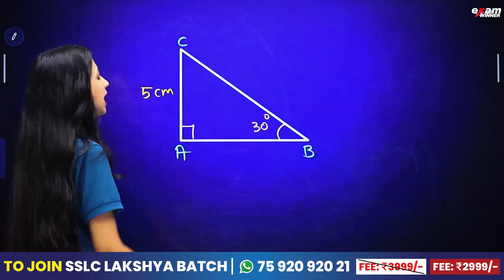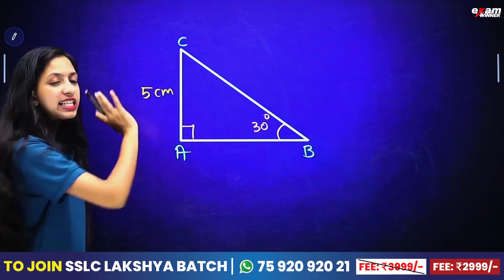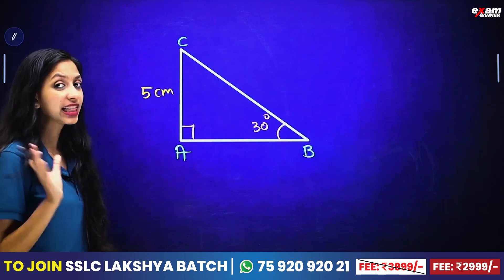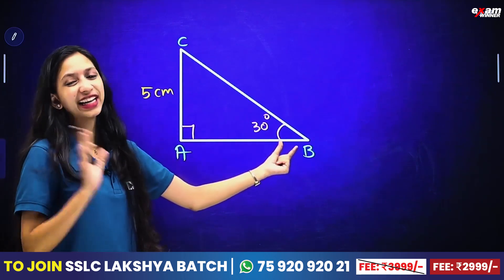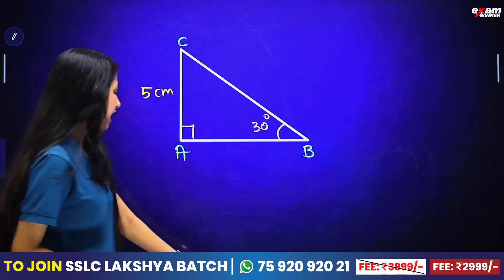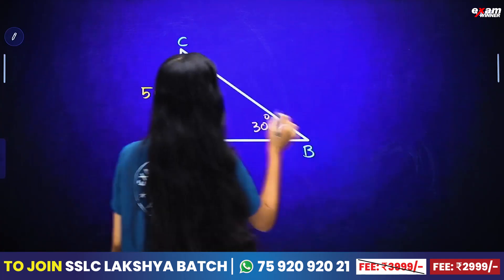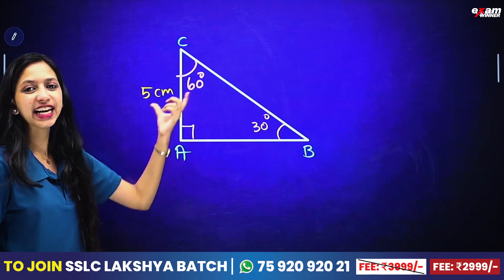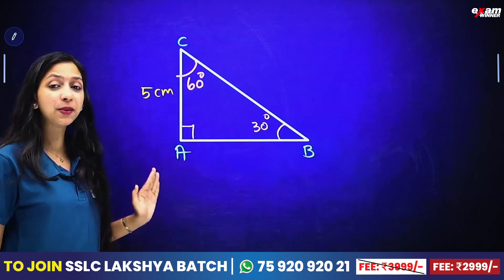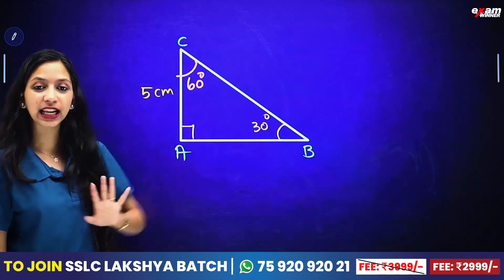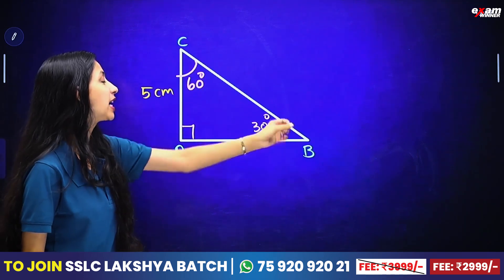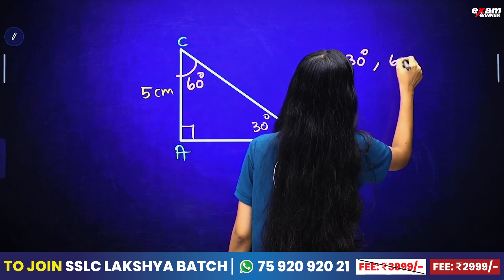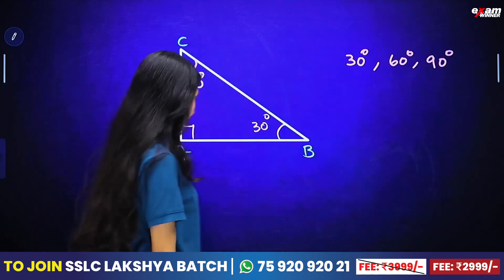Here we have a triangle ABC. The 90 degree angle is at A, 30 degrees is at D. Here we have the angles: 90 and 30, so obviously the third angle is 60 degrees. So this is a 30-60-90 triangle. We have to find AB and BC. We can see here 5 cm. BC — the ratio for 30, 60, 90 is 1 is to root 3 is to 2.